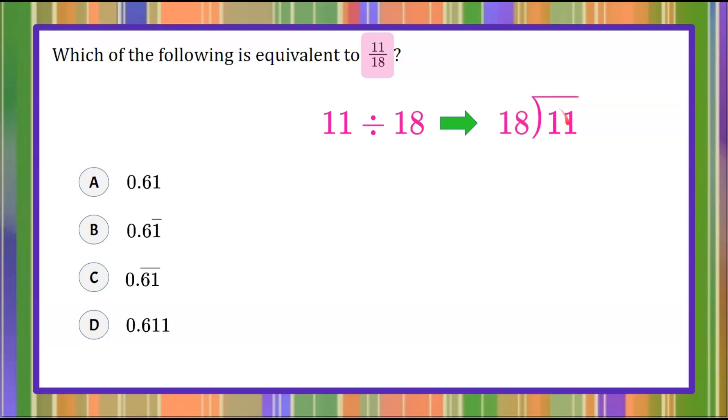Now, we know that 18 is larger than 11. So I'm going to add a decimal point and some trailing zeros so that we can find this decimal value. We know that 18 does not go into 11, so we're going to add our zero and our decimal point.